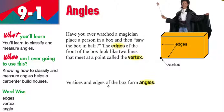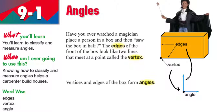Vertices and edges of a box form angles. So if you have edges on the box and that's your vertex, it will form an angle. Here is an example of an angle where this is your vertex, and these two sides are your edges. We'll learn later on that they're also called rays, but right now we'll just call them edges.